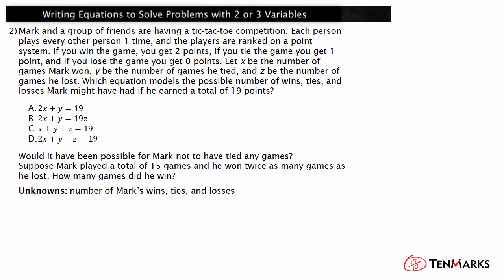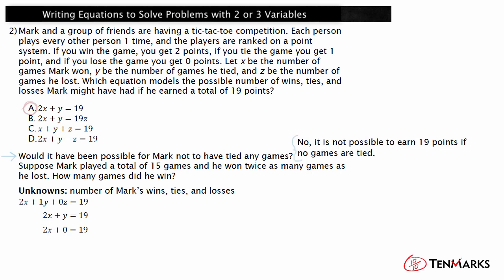Write an equation for his total number of points. To find a player's total points, multiply their wins by 2, their ties by 1, and their losses by 0, then add these up. This can be represented by 2X plus 1Y plus 0Z equals 19, which simplifies to 2X plus Y equals 19. That's the first choice. Would it have been possible for Mark not to have tied any games? Substitute 0 for Y; this equation has a decimal solution for X. Since you can't win only a portion of a game, the solution would not make sense in context. So no, it is not possible to have tied zero games if he earned 19 points.